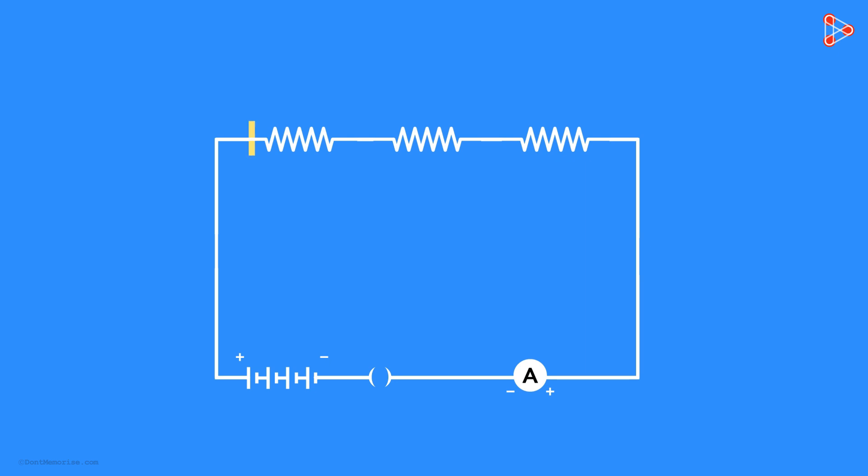In this circuit, we have three resistors of different values connected in series. How do we know they are in series? Because they are connected one after the other, forming just one path and not multiple paths.